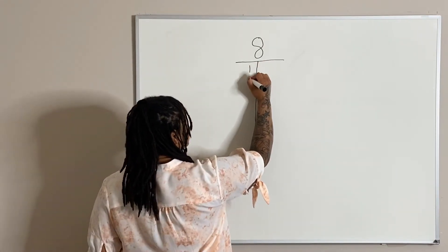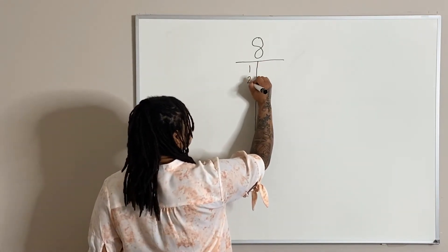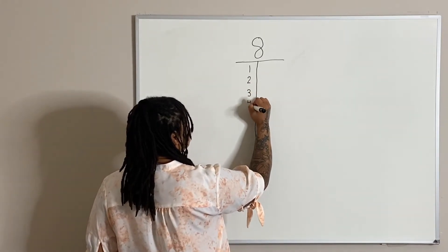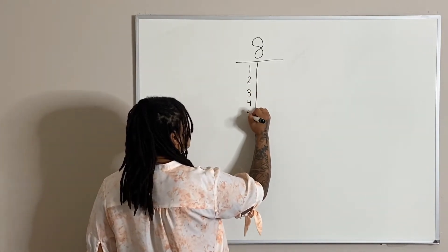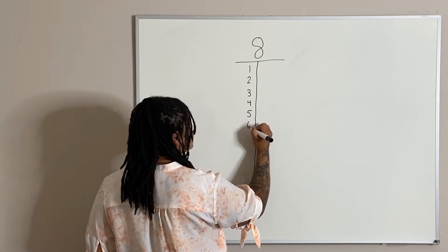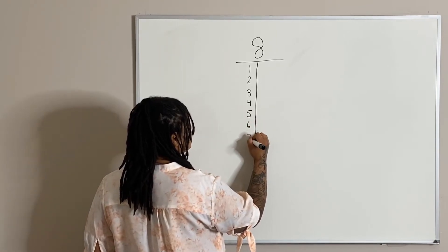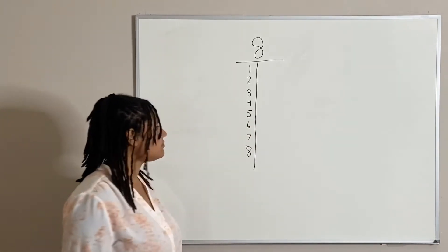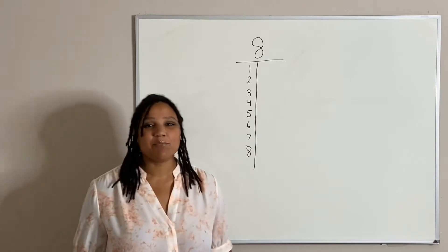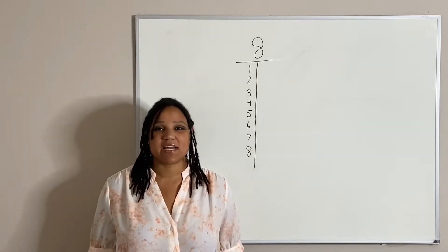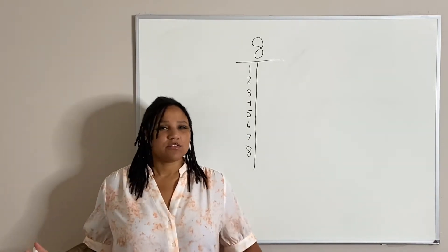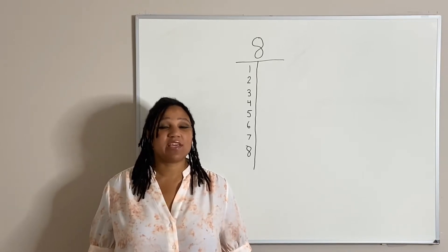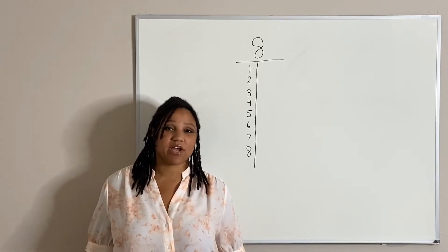So we have one, two, three, four, five, six, seven, and eight. Now I'm going to ask myself, what are two numbers that I can multiply together that will give me the number eight?